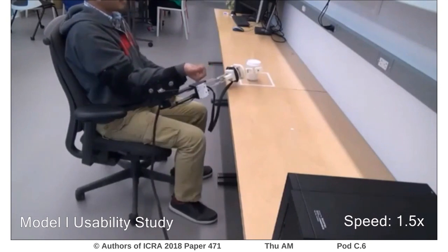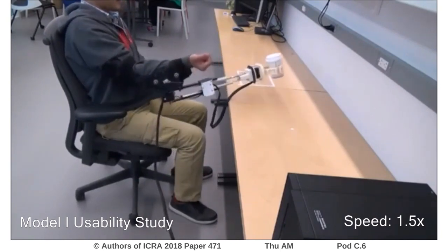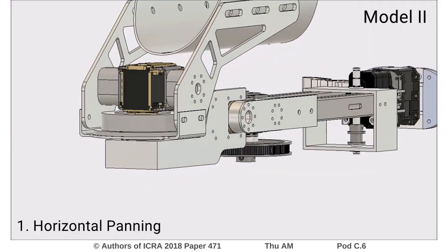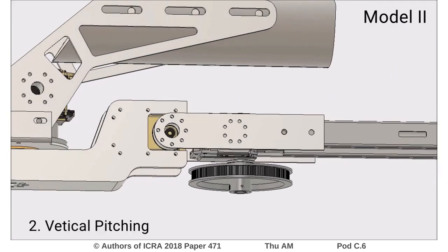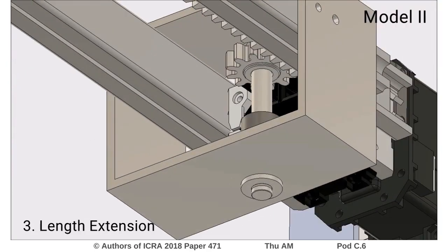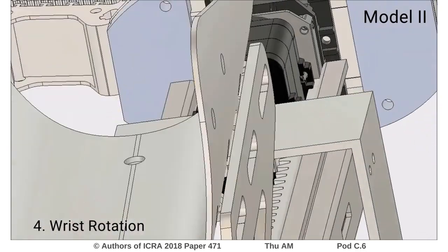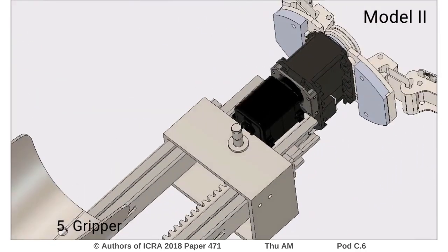From these studies we developed design guidelines for the next prototype with five degrees of freedom, Model 2. It has horizontal panning, an additional vertical pitching degree of freedom, length extension with a belt driven rack and pinion mechanism, an additional rotational degree of freedom at the wrist, and a lighter under-actuated two-fingered gripper.